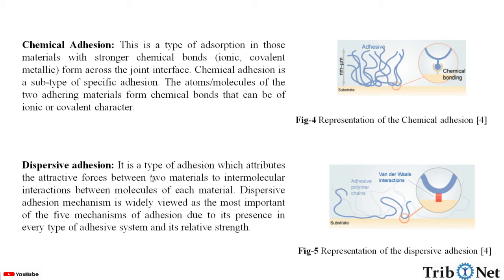Dispersive adhesion: it is a type of adhesion which attributes the attractive forces between two materials to intermolecular interactions between molecules of each material. Dispersive adhesion is widely viewed as the most important of the five mechanisms of adhesion due to its presence in every type of adhesive system and its relative strength. Here we can see the representation of dispersive adhesion.